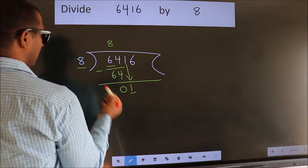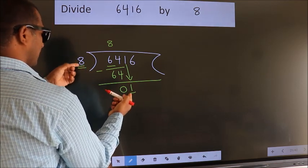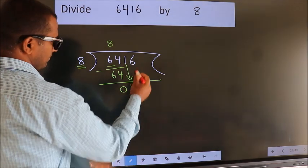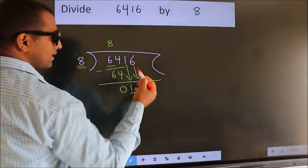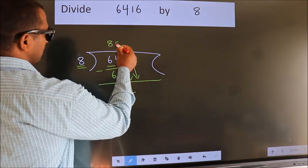Here we have 1, here 8. 1 smaller than 8. So, we should bring down the second number. And the rule to bring down second number is put 0 here.